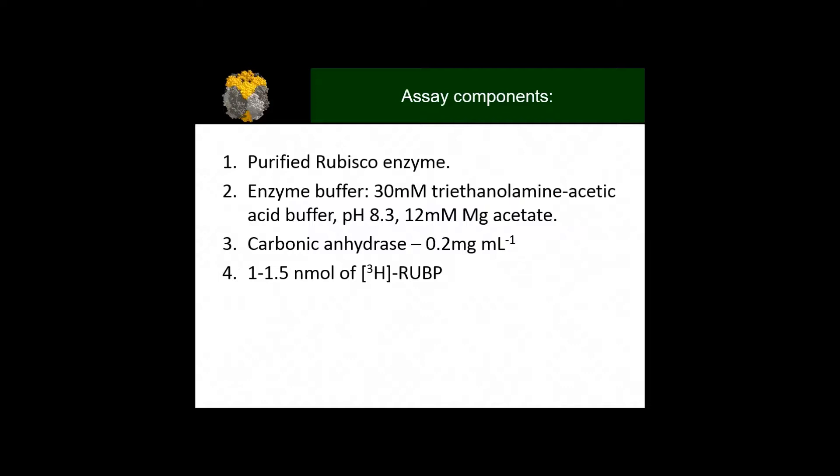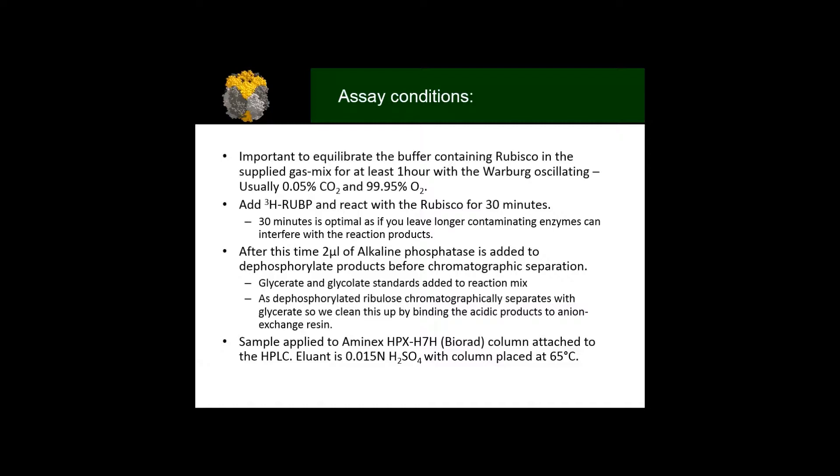The assay components are: purified Rubisco enzyme, proper buffer at pH 8.3 because this impacts the solubility of CO2 within solution, carbonic anhydrase which is super crucial for enabling equilibrium of CO2 between air phase and liquid phase to happen quickly and be maintained, and labeled RuBP. It's important to equilibrate the Rubisco in the supplied gas mix, usually 0.05% CO2 and 0.95% oxygen.